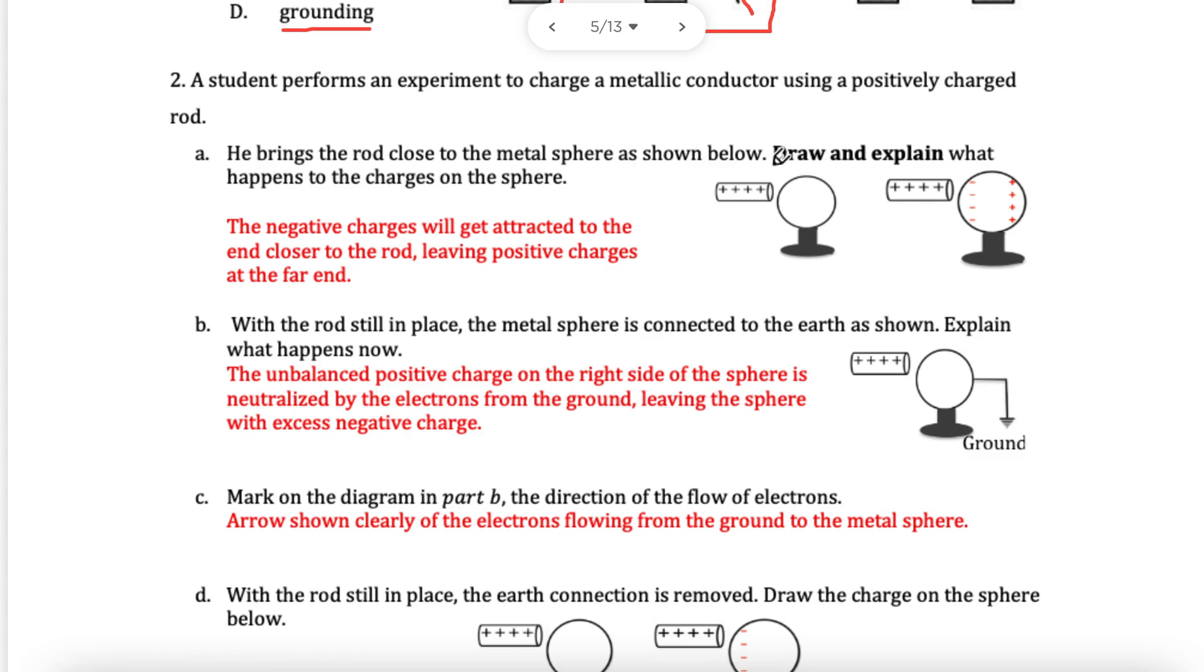In this case, we have a metal rod, and it's brought here, I don't know if it's a metal rod, it's just a rod, but it's close to a sphere. And we have protons over here. Draw and explain. So if I was to draw it, you would have to polarize them. You would have electrons attracted to it.